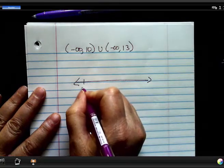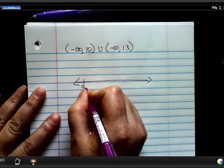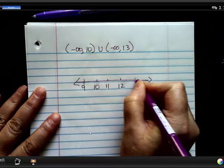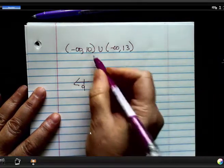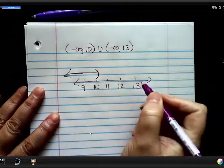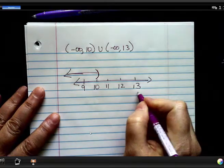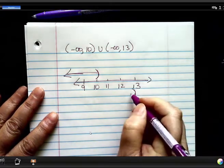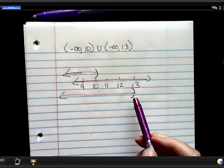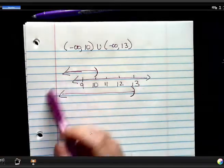So I'm going to have 9, 10, 11, 12, and 13. So this would be a bracket on 10 going this way. And this would be a bracket on 13, sorry, parenthesis going this way.